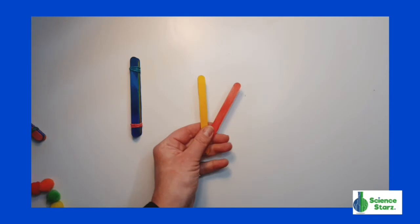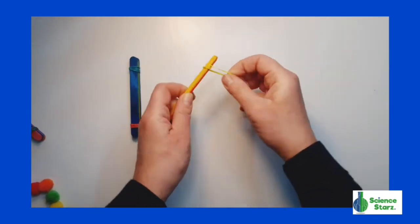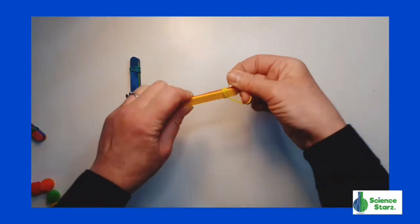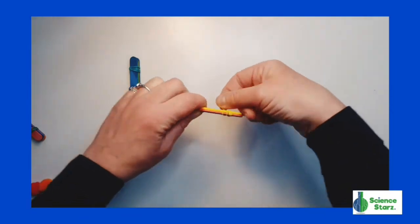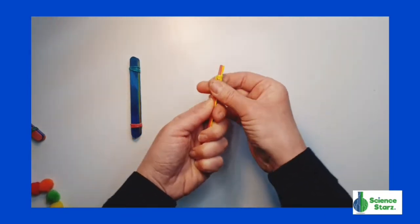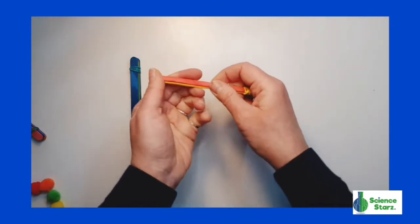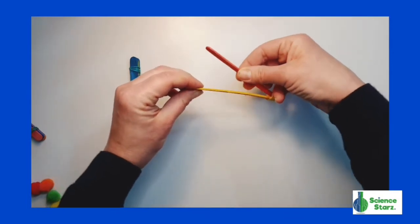For this next step, you're going to take the two remaining craft sticks and an elastic and wrap it around one end of the craft sticks to secure them together. You should be able to carefully open one end of the craft sticks, kind of like a crocodile's mouth.